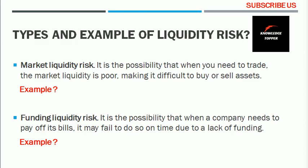The second type is funding liquidity risk, which is the possibility that when a company needs to pay off its bills, it may fail to do so on time due to a lack of available funding. For example, during a slowdown period of business, many businesses may be exposed to funding liquidity risk because their obligations due at that time are greater than the operating cash flow generated. Due to the low capacity for generating cash flows, many businesses may not be able to pay their financial obligations.